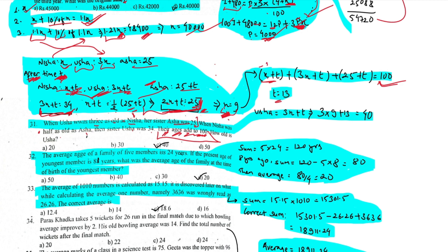This system of equations satisfies the variable conditions according to the question. Solving for t gives t equals 13. The question asks for Usa's age: 3x plus t equals 3 times 9 plus 13 equals 27 plus 13 equals 40.